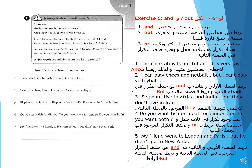Now we go to page 11. Exercise C: Joining sentences with 'and', 'but', or 'or'. You can use exercise A. And, but, or.